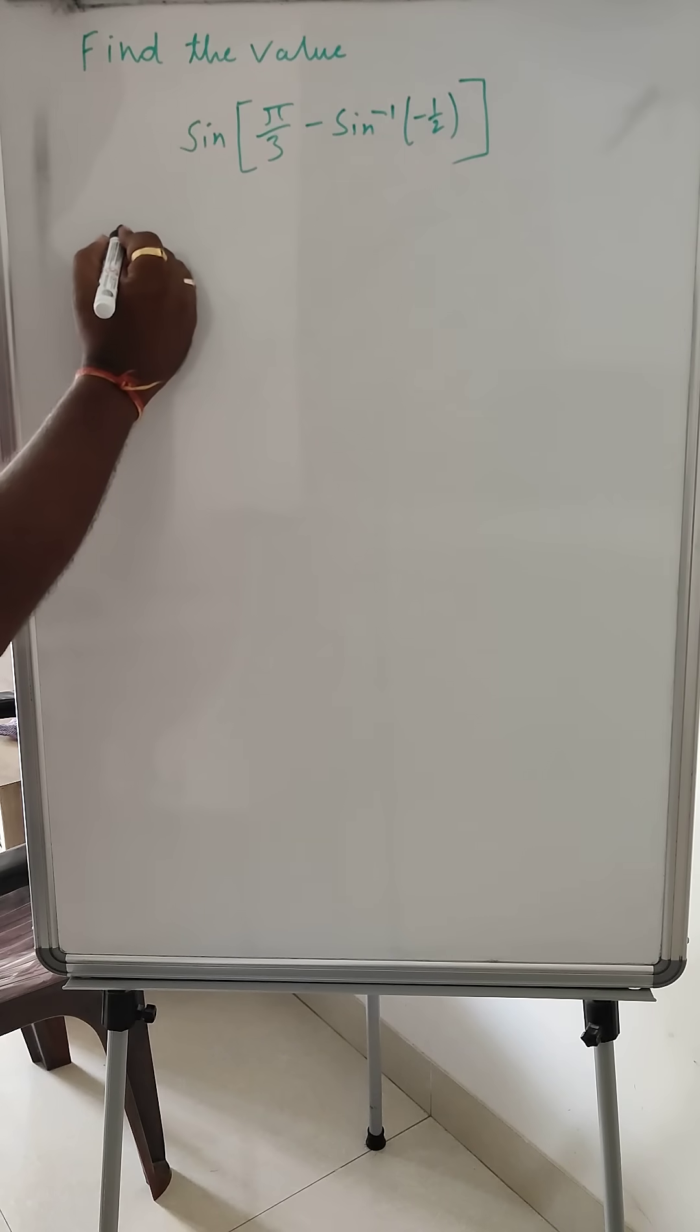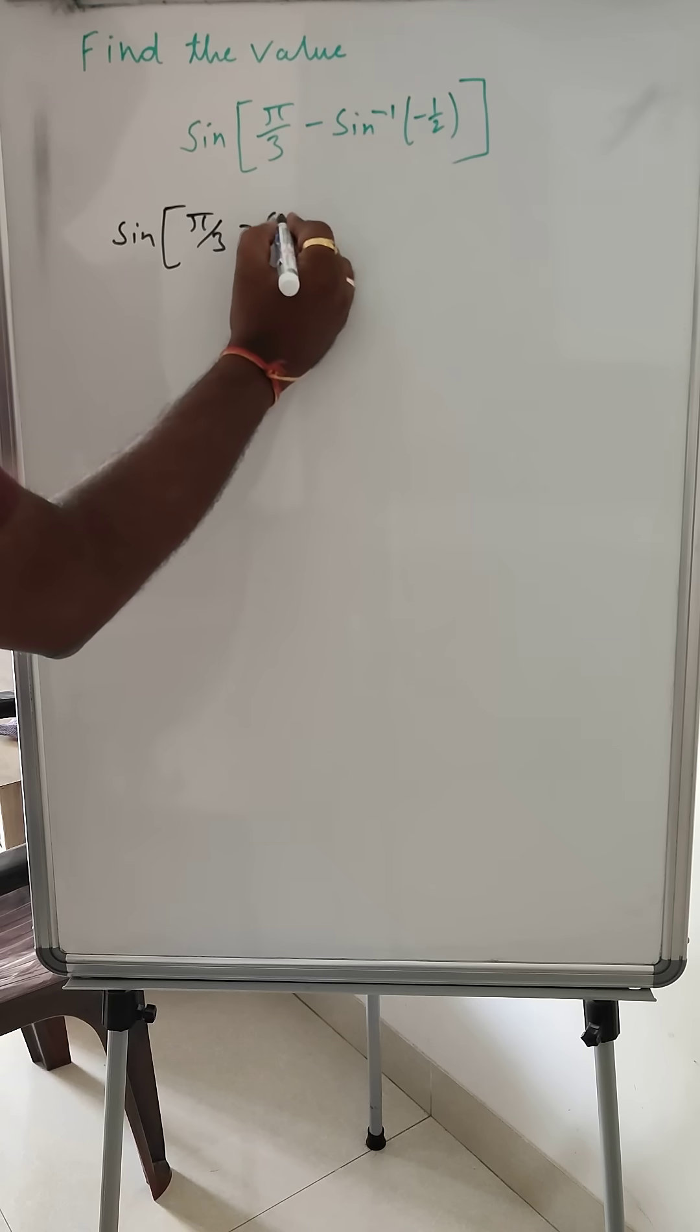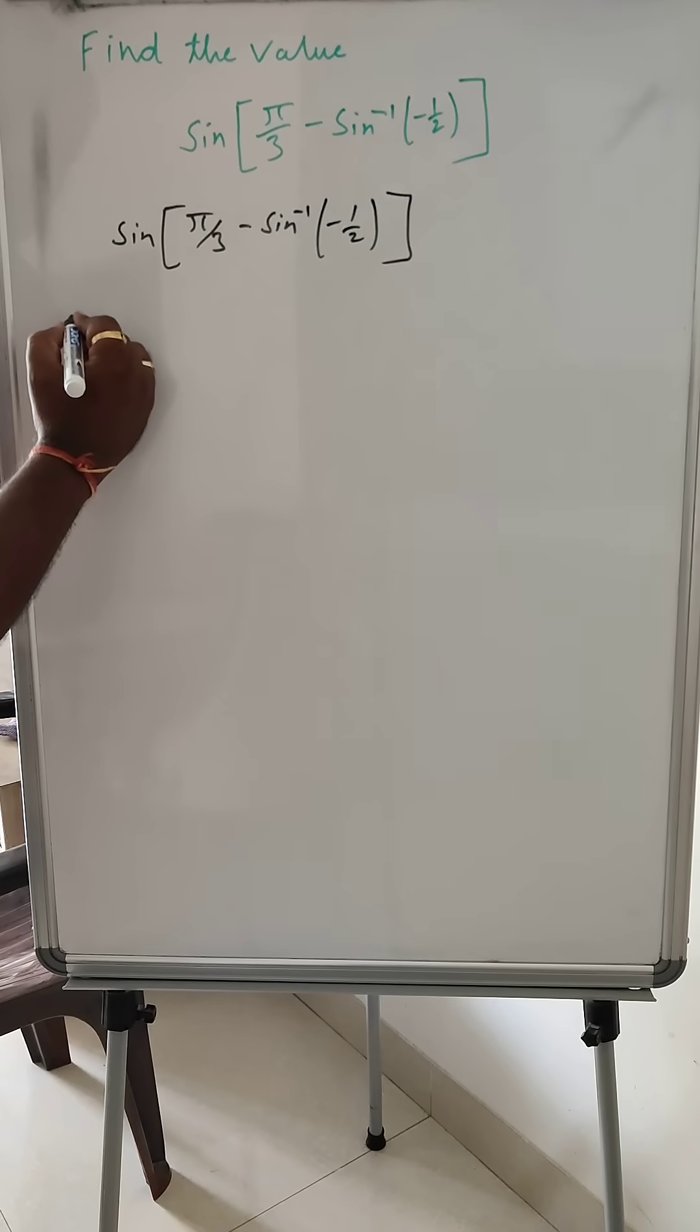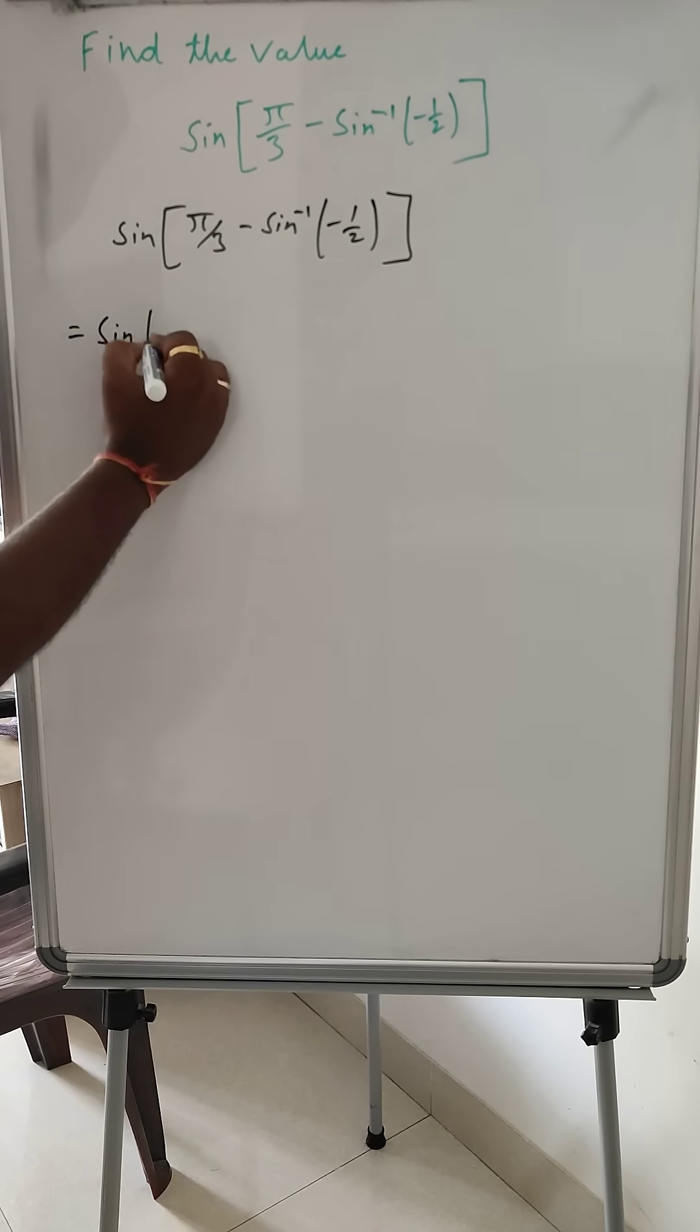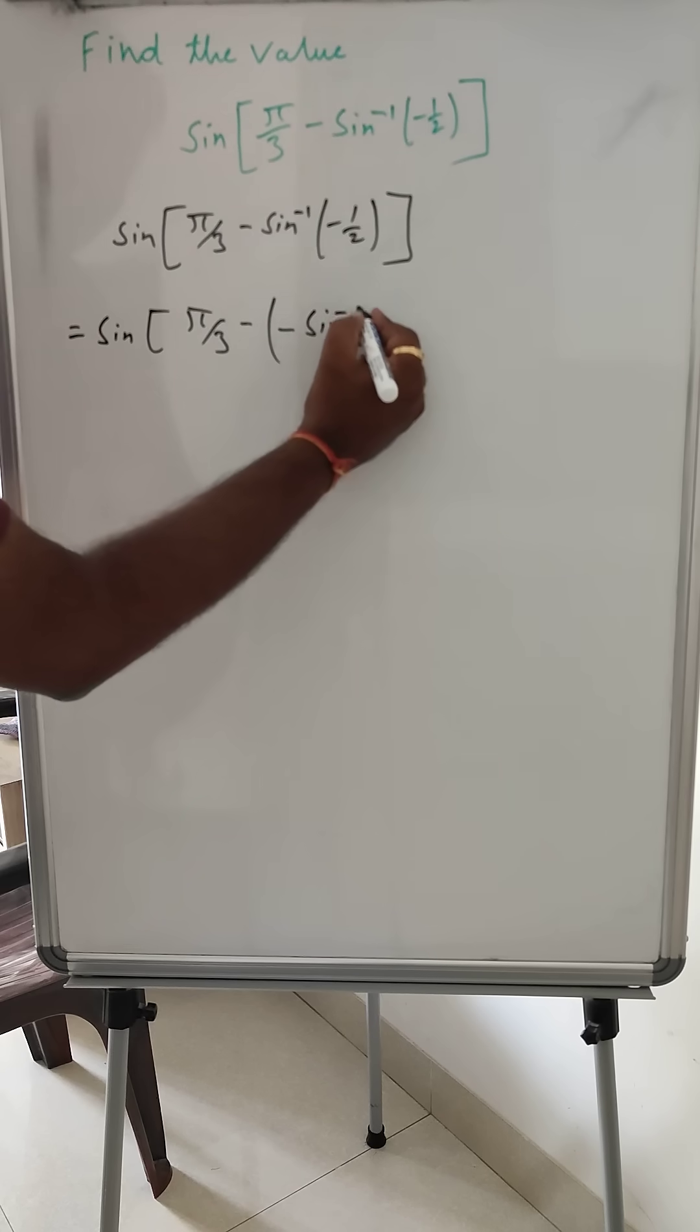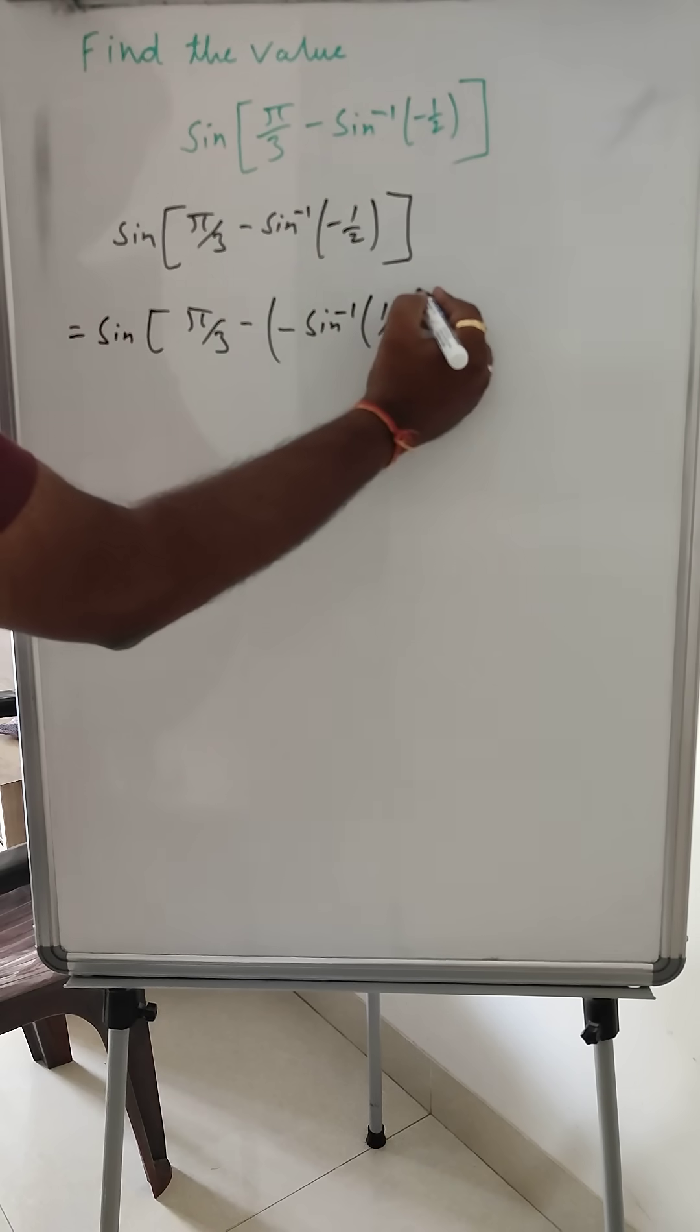So let's start doing this. Now this is sin(π/3 - sin⁻¹(-1/2)). This is the problem. So we can start doing this. Sin π/3 minus, we can put into this bracket, take minus outside, sin inverse 1/2.